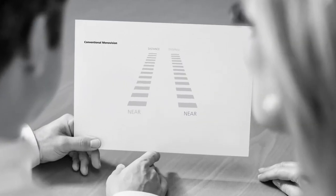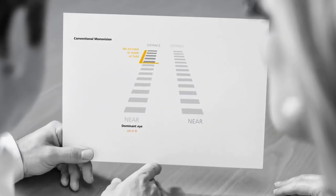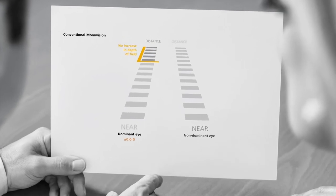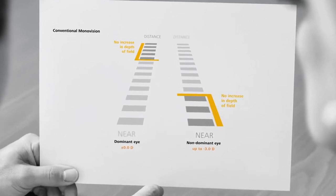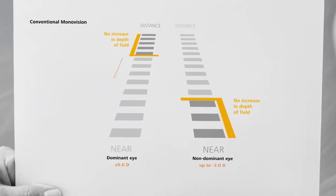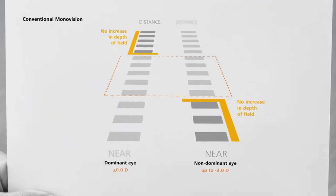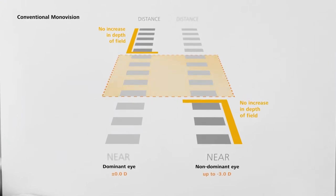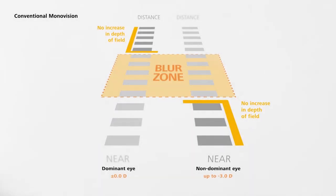With conventional monovision, the dominant eye is corrected for distance vision to almost plano. The non-dominant eye is usually corrected for near vision by up to minus 3 diopter. Not all patients can compensate the different levels of correction. Many experience a blur zone in the intermediate range.